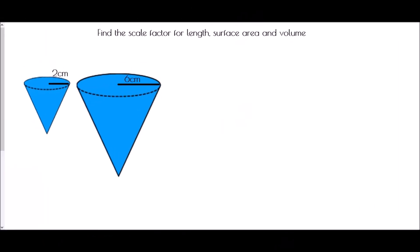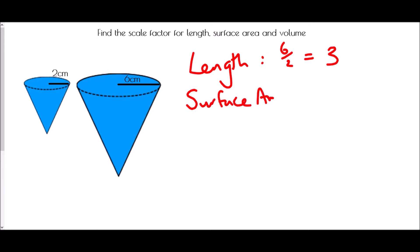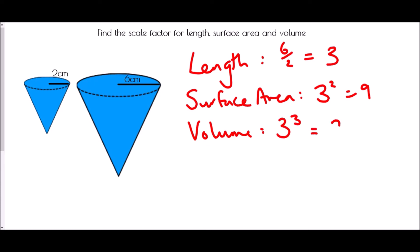In each of these questions we're looking at a pair of similar 3D shapes, and in each case we want to find the scale factor for the length, the surface area, and the volume. We've been given a corresponding length — it's the radius in both cases. The length scale factor is the larger one divided by the smaller one, so 6 divided by 2, giving a length scale factor of 3. The surface area scale factor is the linear scale factor squared: 3 squared equals 9. And the volume scale factor is the linear scale factor cubed: 3 cubed is 27.